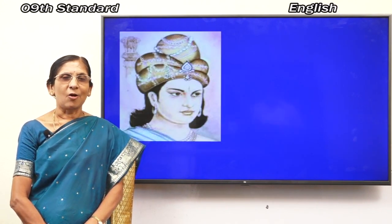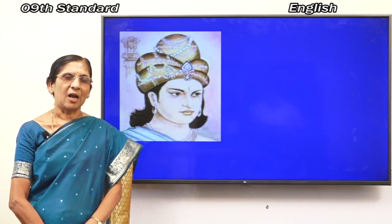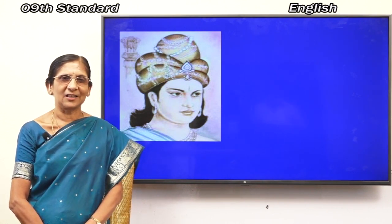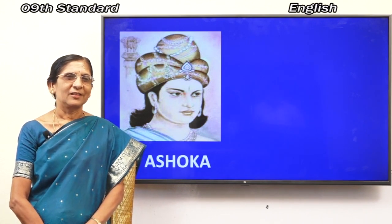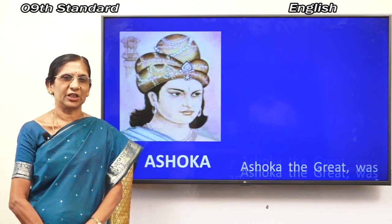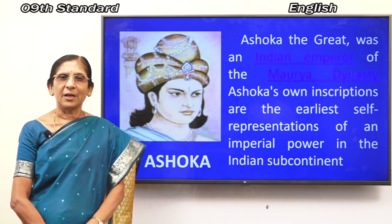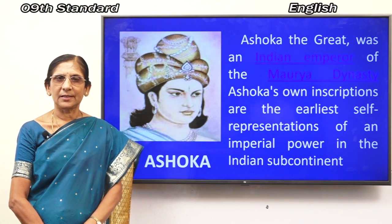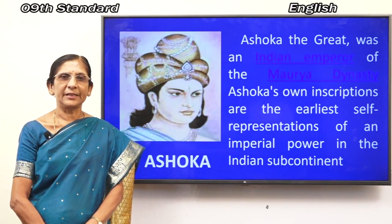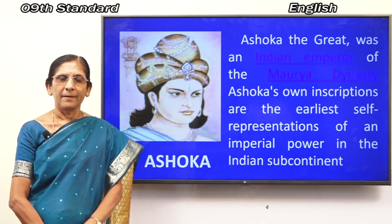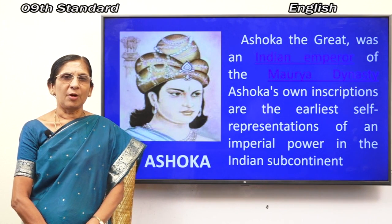Now you can see another picture. Observe the picture and identify the king. Very good — he is Ashoka! You have identified correctly. Ashoka the Great was an Indian emperor of the Maurya dynasty. Ashoka's own inscriptions are the earliest self-representations of an imperial power in the Indian subcontinent.